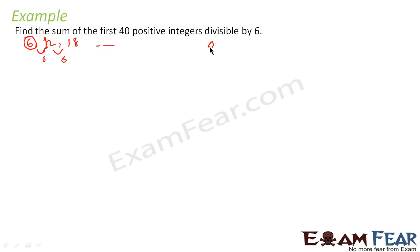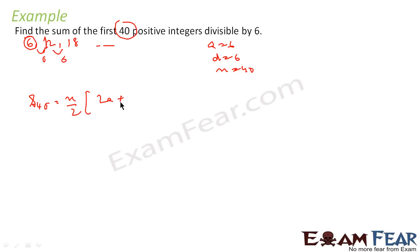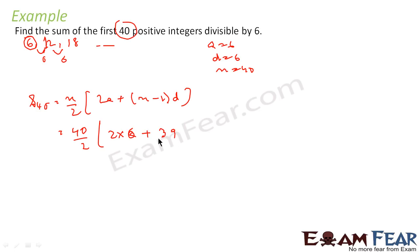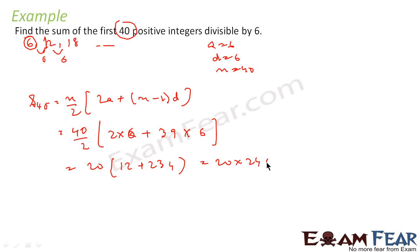Here we know that A is equal to 6, D is equal to 6, and N is equal to 40 because we are talking about the sum of the first 40 numbers. Using the formula, S40 is N by 2 into 2A plus N minus 1 times D. With N=40, that gives 40 by 2 into 2×6 plus 39×6, which becomes 20 into 12 plus 234, that is 20 into 246, giving us 4920.